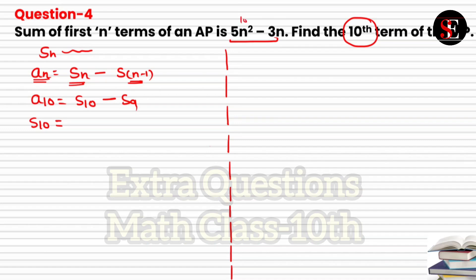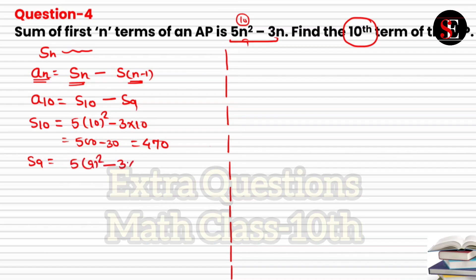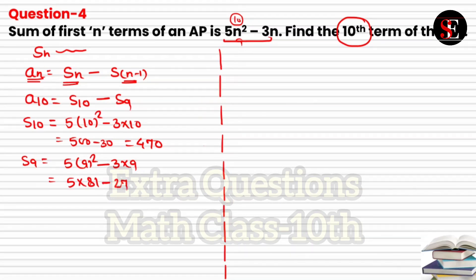For S₁₀, use n = 10: 5×100 − 3×10 = 500 − 30 = 470. For S₉, use n = 9: 5×81 − 3×9 = 405 − 27 = 378. Then a₁₀ = S₁₀ − S₉ = 470 − 378 = 92. Now let's see the other method.